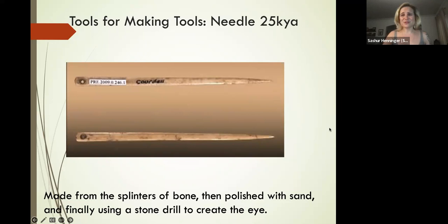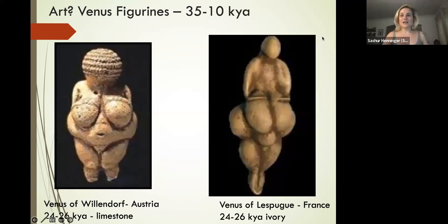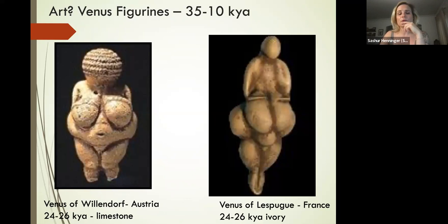We're also making art. These are Venus figurines. We saw one out of Africa already, well over 100,000 years old and from another species entirely, that kind of carved out the female form.